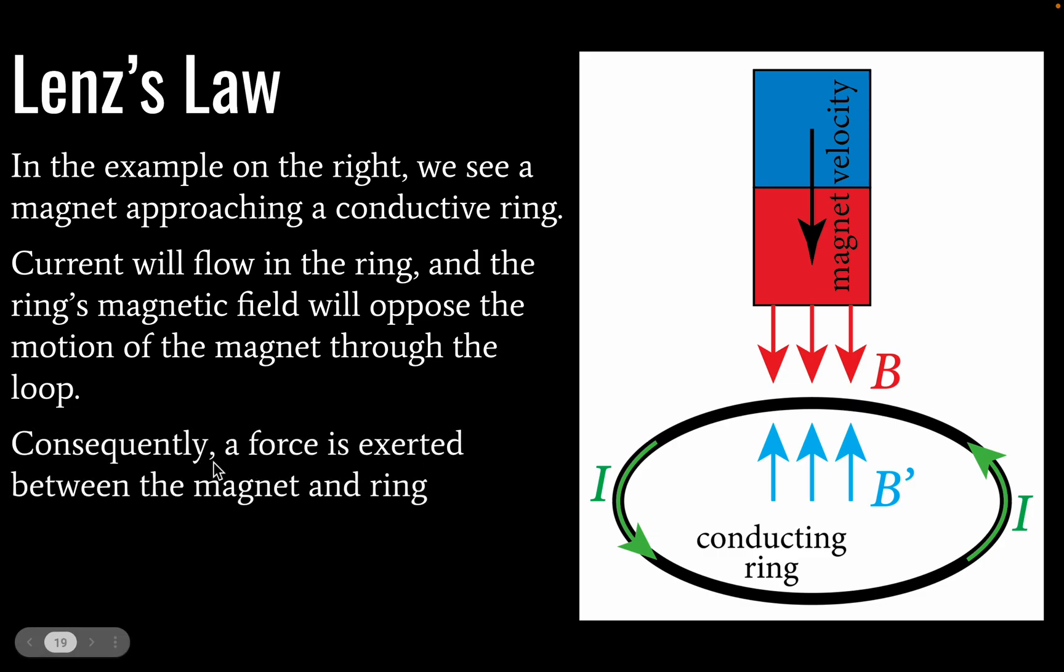This also is going to produce a force between the magnet and the ring. So this magnet will actually slow down due to the opposing force. You will not need to calculate that force for IB physics. We don't cover Lenz's law quantitatively.